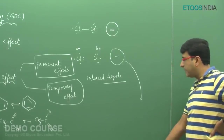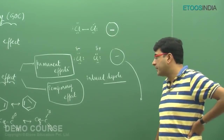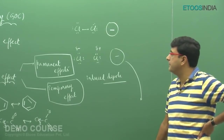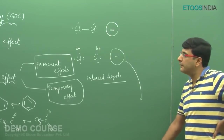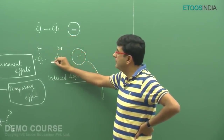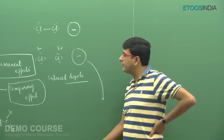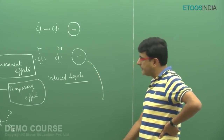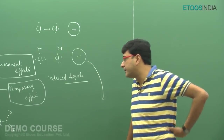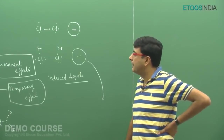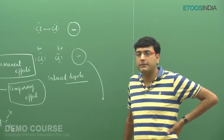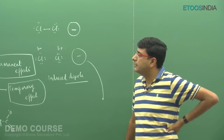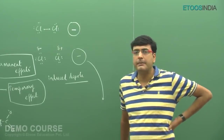Permanent effects are those which remain in the molecule always. Temporary effects are those which are generated because of the presence of some external particles — they are not present in molecules always and emerge only with the existence of some particles in close proximity. For example, the presence of an anion will make the Cl₂ molecule a dipole — that is a temporary effect, taking place only in the presence of the anion.